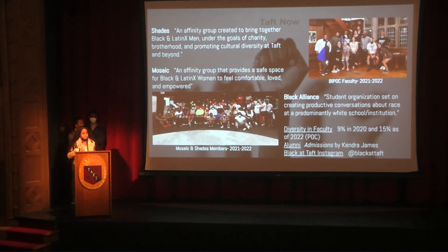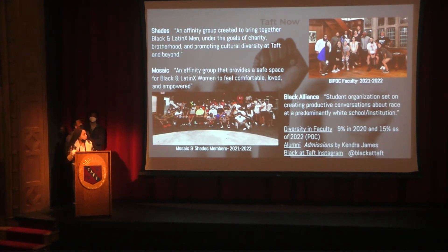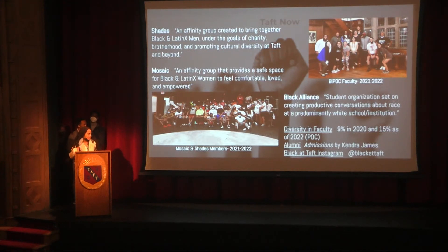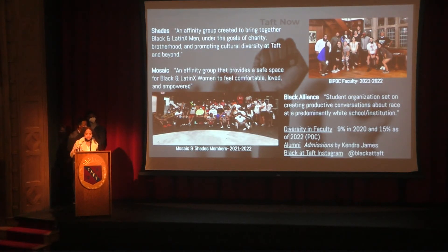So what does Taft look like now? Shades is an affinity group created to bring together black and Latinx men under the goals of charity, brotherhood, and promoting cultural diversity at Taft and beyond. Mosaic is an affinity group that provides a safe space for black and Latinx women to feel comfortable, loved, and empowered. The Black Alliance Club is a student organization set on creating productive conversations about race at a predominantly white institution. The diversity in faculty increased from 9% in 2020 to 15% as of 2022. We also have a note about Admissions, a book written by Kendra James, who was the first black legacy here at Taft, graduating in the class of '05. And of course, the Black at Taft Instagram, which highlights the black experience from classes before and current classes today.